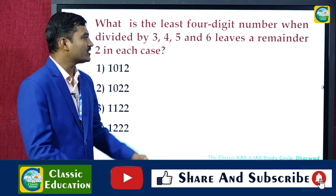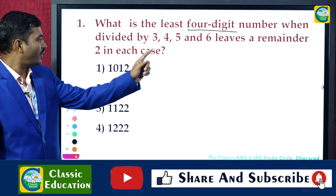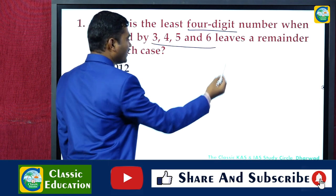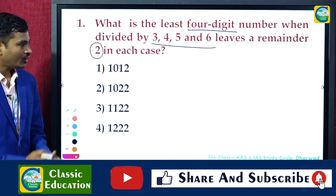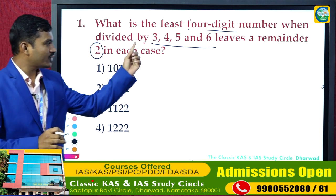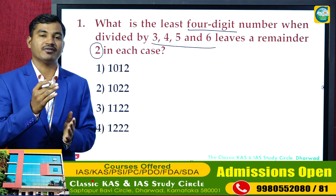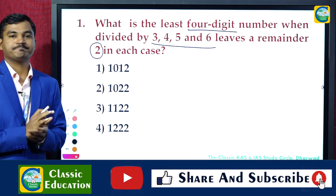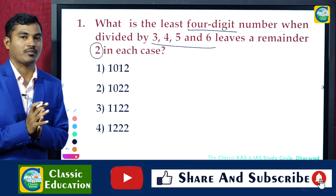What is the least four-digit number which, when divided by 3, 4, 5, and 6, leaves a remainder of 2 in each case? Now, what most students do is they will first take the LCM, take the least four-digit number, divide it, and the procedure goes. But we can solve this problem within 20 seconds if we understand the concepts properly.